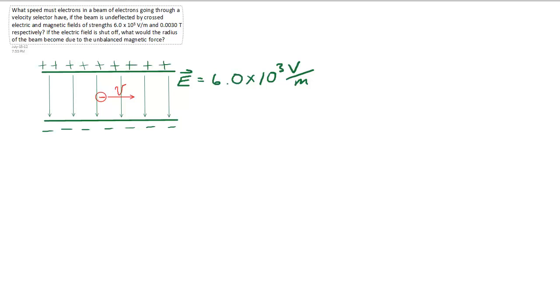A good way to start these problems is to draw yourself a picture of what you think the velocity selector might look like. So here I've drawn my electron labeled with a negative sign moving to the right with a velocity V. And I've started by drawing in the parallel plates that are creating the electric field.